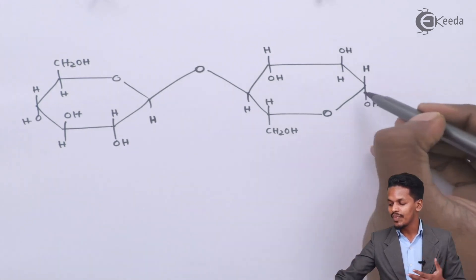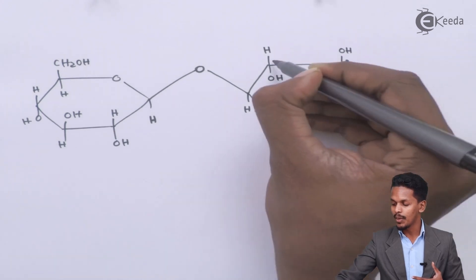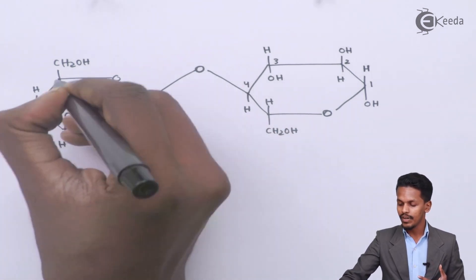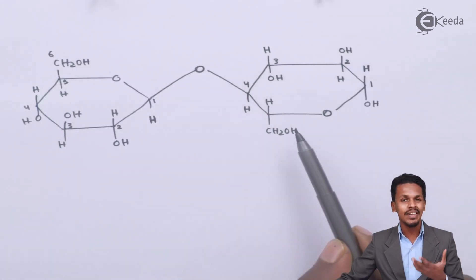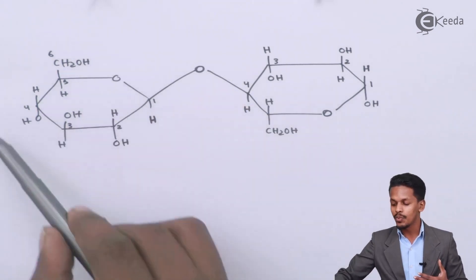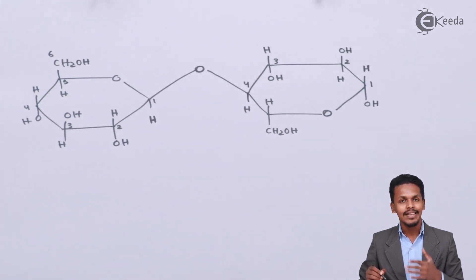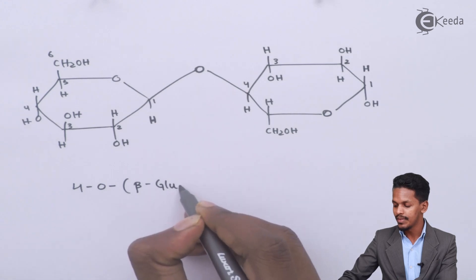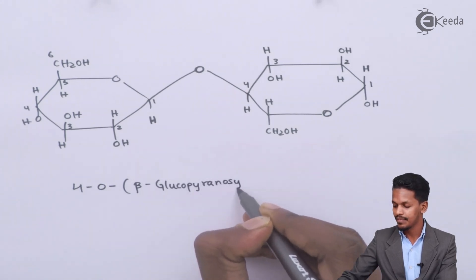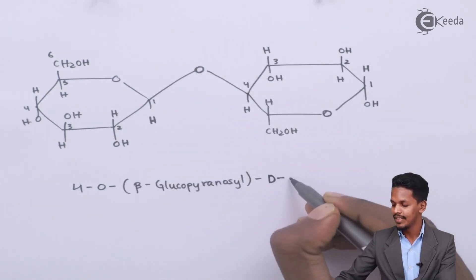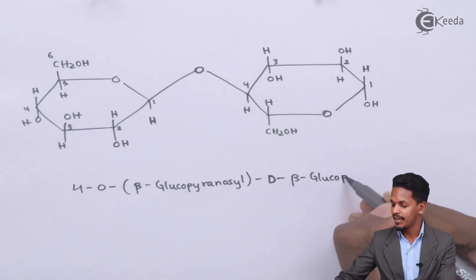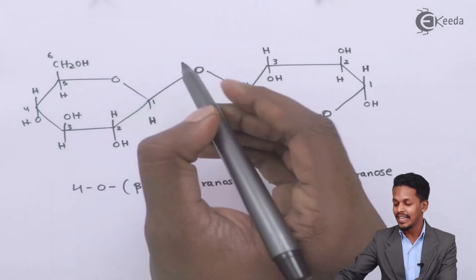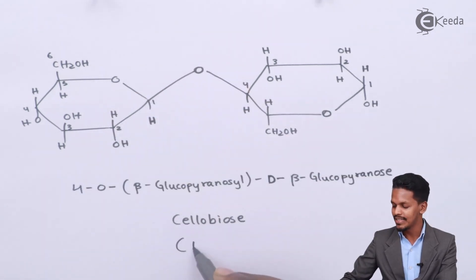Talking about the carbon numbering: this is carbon number 1, carbon number 2, carbon number 3, carbon number 4, carbon number 5, and carbon number 6. On the other ring: carbon number 1, 2, 3, 4, 5, and 6. On the fourth position of this beta D-glucopyranose, this group is attached to the oxygen atom, and that's the reason the name of cellobiose can also be given as 4-O-beta-glucopyranosyl-D-beta-glucopyranose. This is the structure of cellobiose where the glycosidic linkage is on the upper side — we could also call it the beta-anomer.